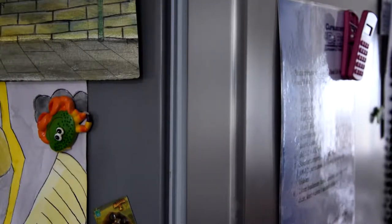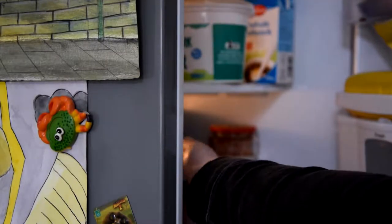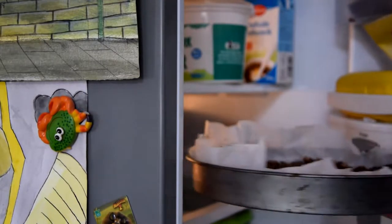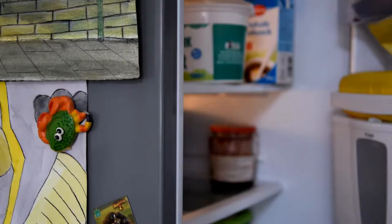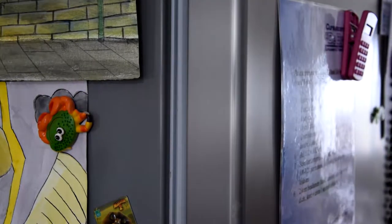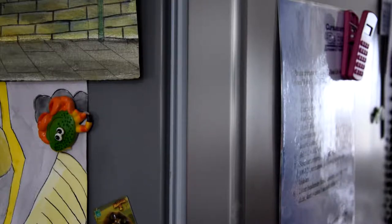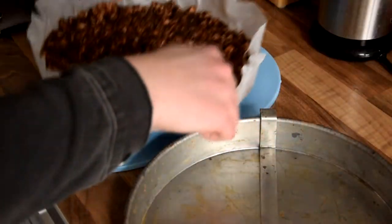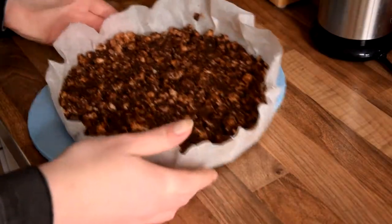When you feel like it's time, get it out of the fridge and lift the paper out of the cake tin. You can put the tin right back in the cabinet or wherever you keep it. Just because of the paper, it didn't get dirty.